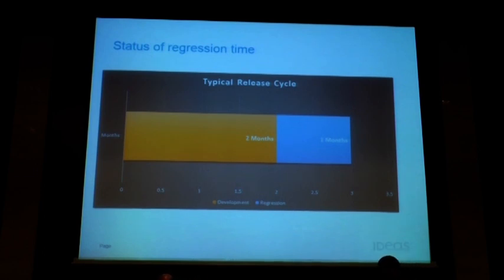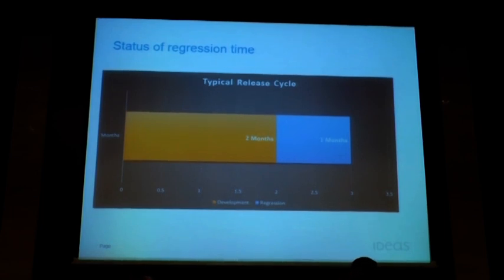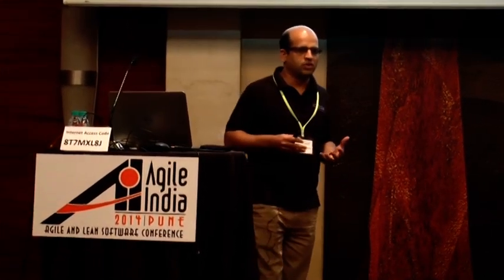Almost a month was spent doing various types of regression testing — UI testing, functional testing. We basically tried to check all the modules and all the impacted areas of the application just to ensure that whatever we were releasing to production was going to be stable. Even at that time we had more than 3,000 hotels using our application, so any small mistake would lead to revenue loss for them.